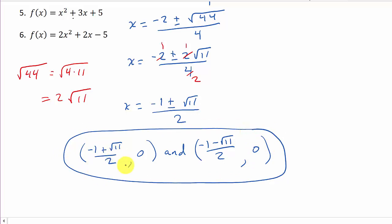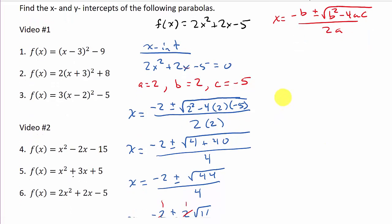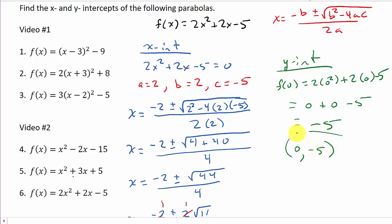Now let's find the y-intercept. f(0) = 2(0)² + 2(0) - 5 = 0 + 0 - 5 = -5. So our y-intercept is (0, -5). Check out my other videos, give me a like, share, and subscribe — thanks for watching.